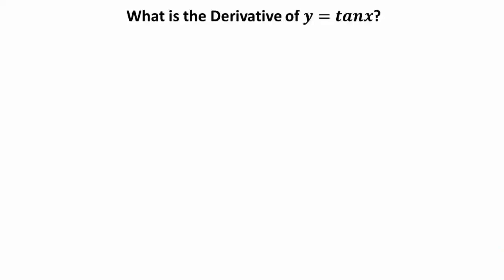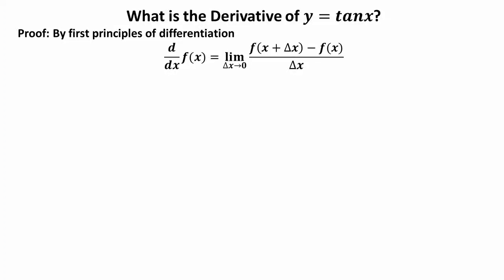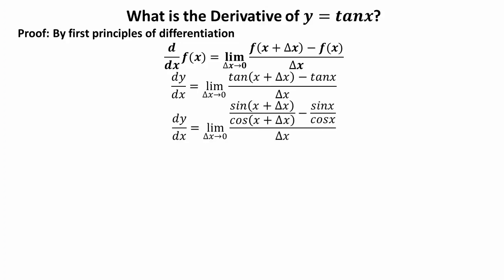Next, what is the derivative of y = tan(x)? To prove this result we will use the first principle of differentiation: dy/dx = limit as Δx→0 of f(x + Δx) - f(x) over Δx. So dy/dx = limit as Δx→0 of [tan(x + Δx) - tan(x)] over Δx. We can write tan(x + Δx) as sin(x + Δx)/cos(x + Δx) and tan(x) as sin(x)/cos(x).